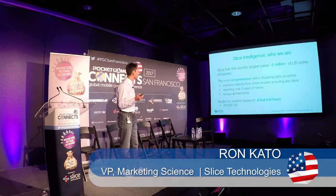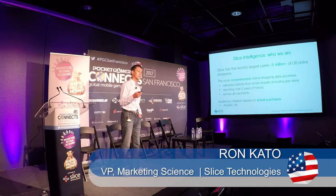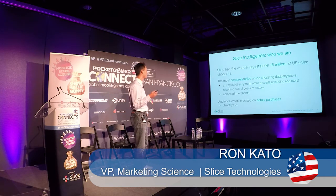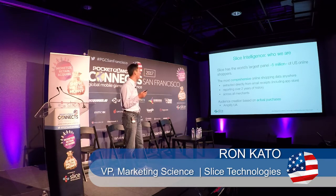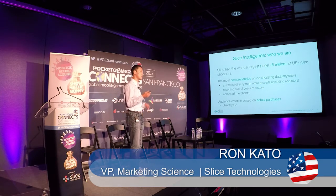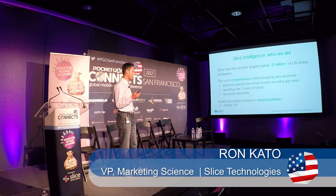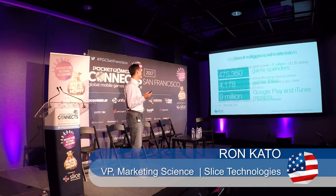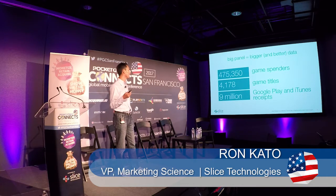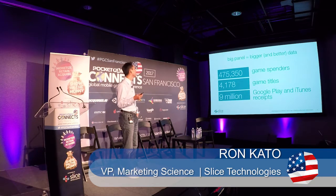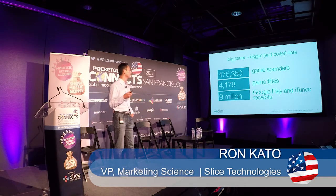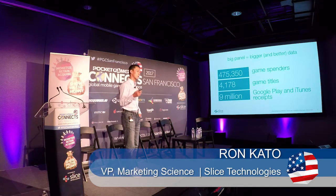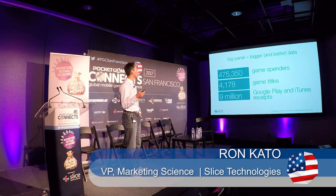Sites Intelligence is a data science company. We have about 5 million people for whom we see their comprehensive online shopping behavior. The way we do that is by parsing data out of email receipts. One of the services we provide is creating audiences for lookalike targeting, especially for UA. The dataset we'll be working with today covers mobile game spenders — close to half a million users who spent money in games over the past 12 months. We've identified more than 4,000 titles and found 9 million Google Play and iTunes receipts.